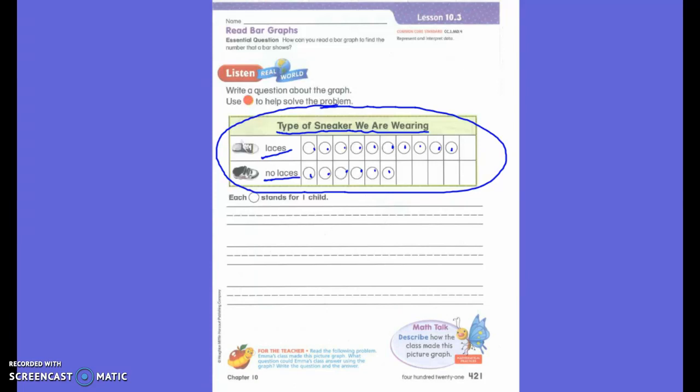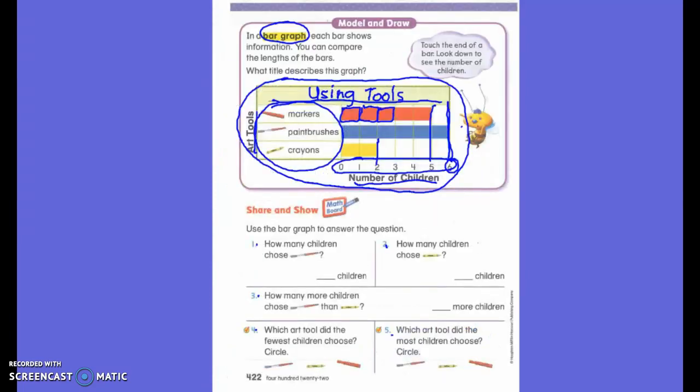Now the other thing that I want to look at here real quick is notice this says how many, how many, how many more. Do you see the difference? What does how many more mean?